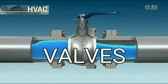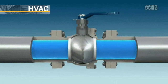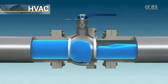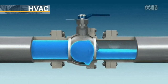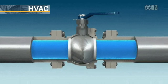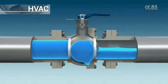A valve is a device for controlling the flow of fluid in a pipeline. Control may mean limiting or throttling flow, preventing backflow, or completely stopping flow. Automatic control valves will be discussed in another video. In this video, we are going to discuss only manually operated valves. There are a great many different configurations of manual valves, and they can be grouped into a few general classes.